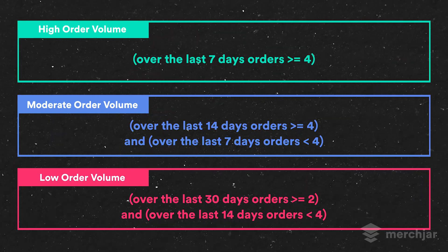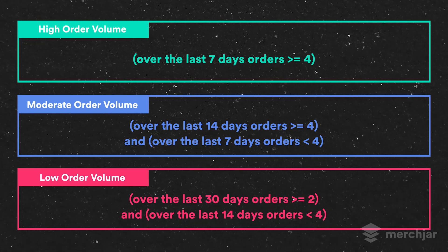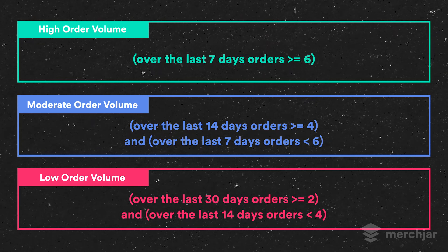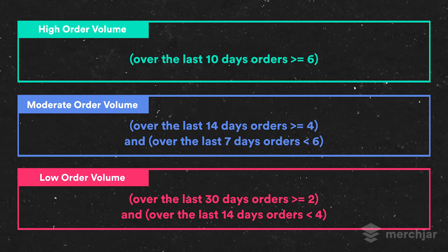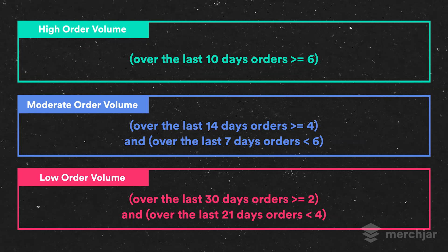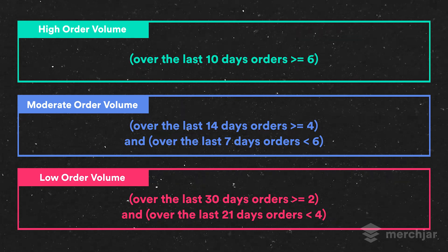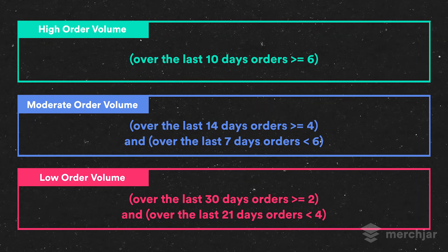Low and moderate order volume recipes each have an extra line in the trigger that prevents overlap with the other bid change recipes, so multiple recipes aren't making changes to the same targets simultaneously. You can make changes to the number of orders or the look back window for any of these recipes. However, if you change the moderate or high volume recipes, you'll need to carefully update the other recipes to avoid overlap. For low order volume recipes, the number of orders or look back window can be changed without needing to adjust the moderate or high volume recipes.